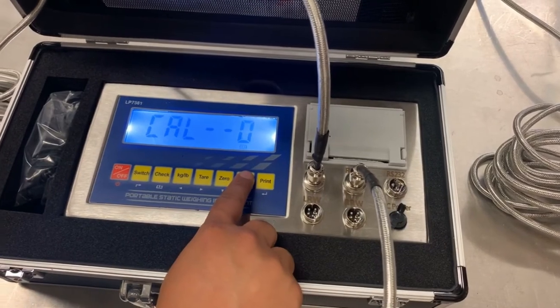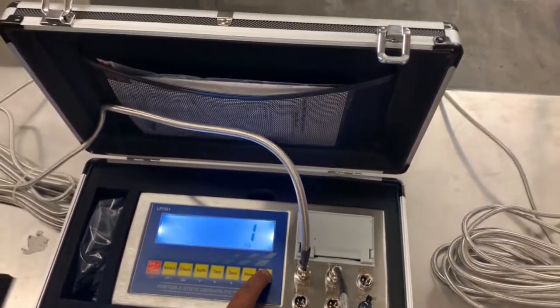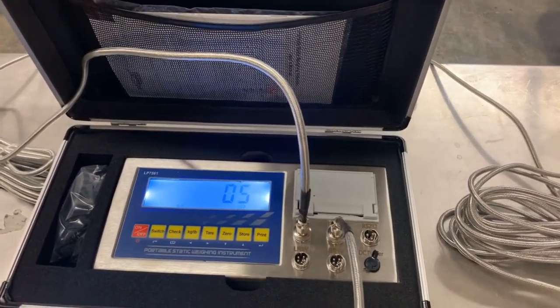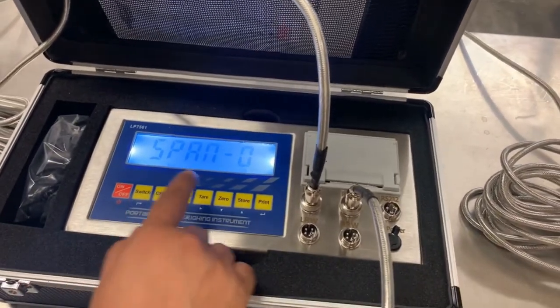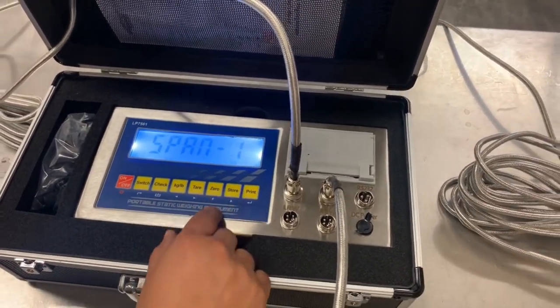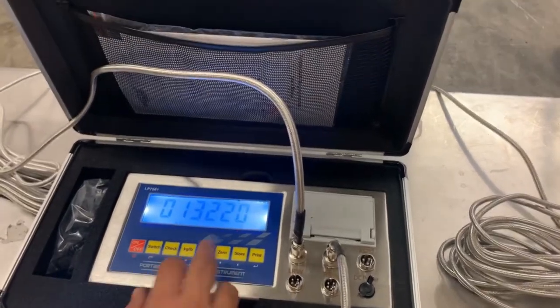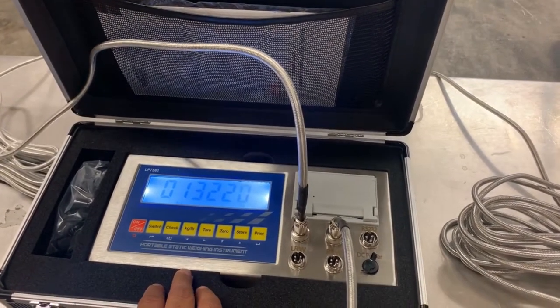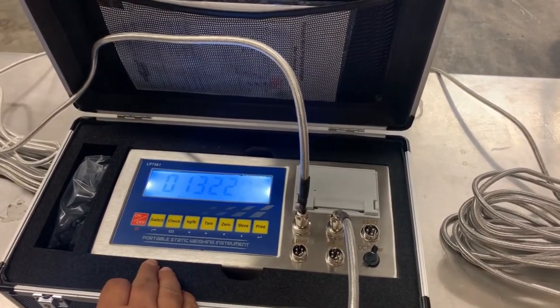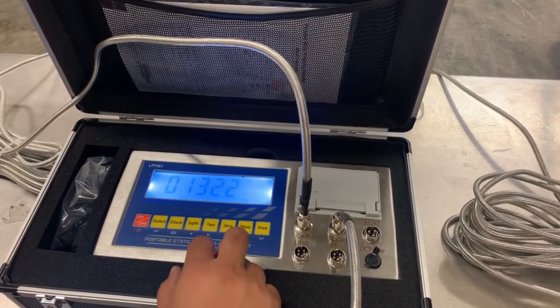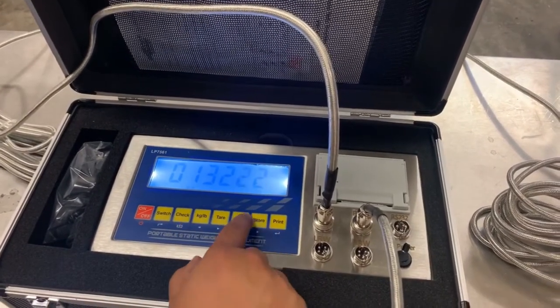Once you see the countdown, it's going to go to span. You'll press one again. In this section is where you would enter the calibration weight that you're using to calibrate the scale. The weight that we have as of today is 1,102 pounds, so I need to write that in.